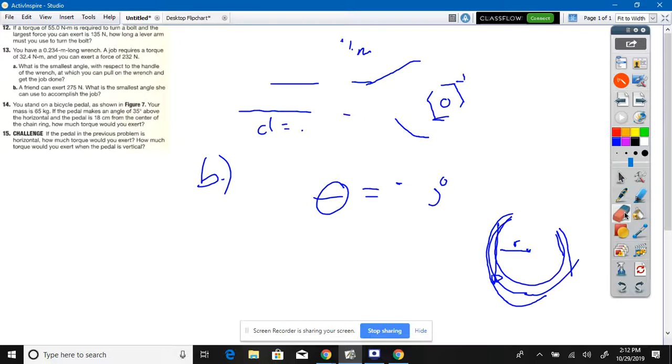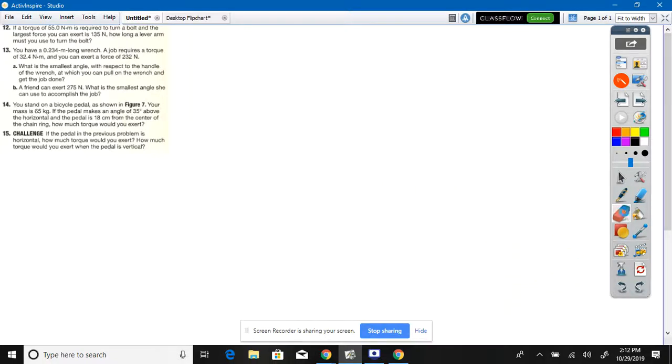Number 14. Here's a bicycle chain, here's the pedal. Relative to the horizontal, it's 35 degrees. Your mass is 65 kilograms, you have weight pressing down on it. It's 0.18 meters, the length of the metal part of the pedal.